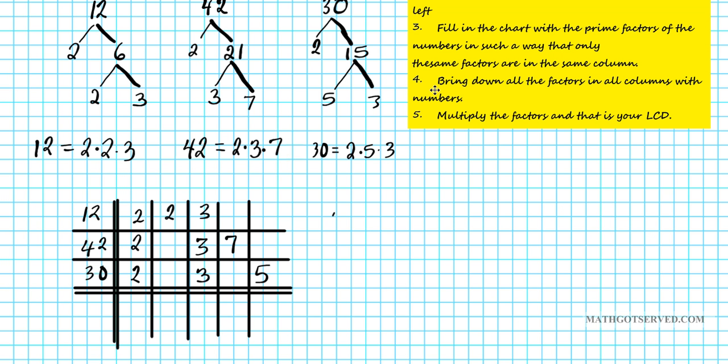Now step 4, we're to bring down the numbers in all the columns with numbers in them. So let's go ahead and bring them down. We're going to have 2, 2, 3, 7, 5.